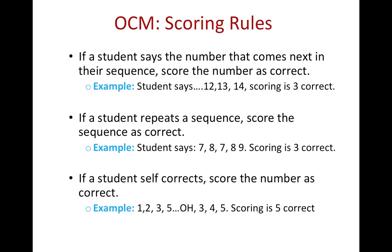For the oral counting measure, there are several scoring rules to keep in mind. The examiner copy will come with examples to follow for scoring purposes. If a student says the number that comes next in their sequence, score the number as correct — for example, a student says 12, 13, 14; scoring is three correct. If a student repeats a sequence, score the sequence as correct — for example, if a student says 7, 8, 7, 8, 9; scoring is three correct.